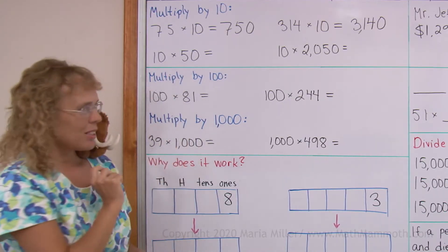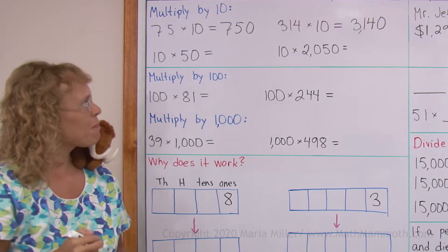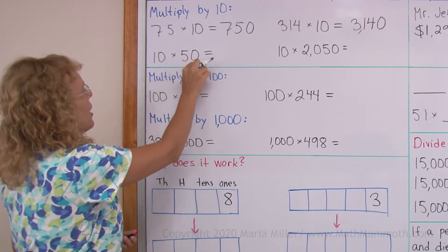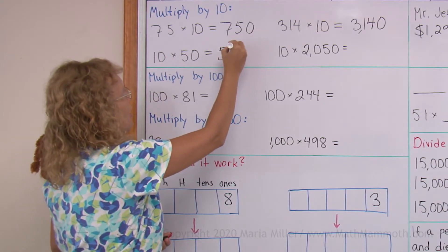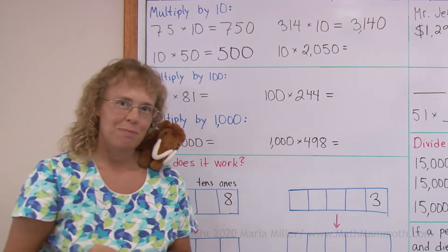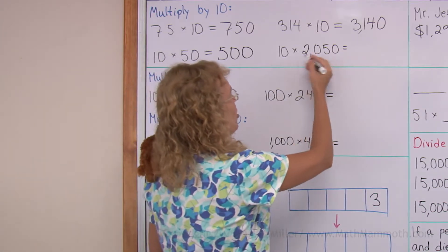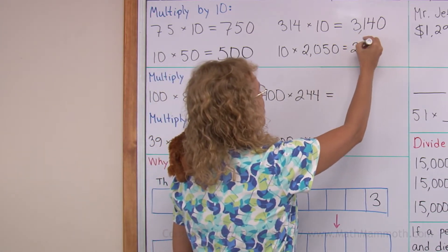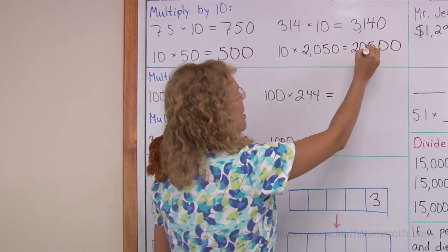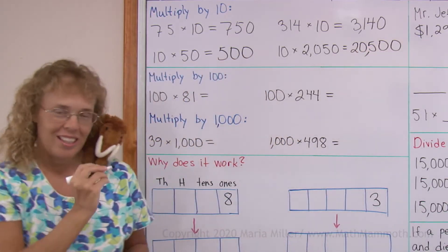10 times 50, can you tell me what that will be? Don't take the 10, take this number that we are multiplying by 10, the 50. And write one zero after it, 500. How about that last one? There's 2,050. And then one zero after it. So we get 20,500.